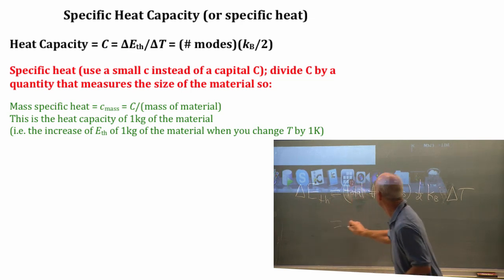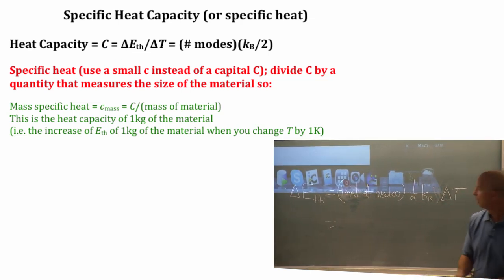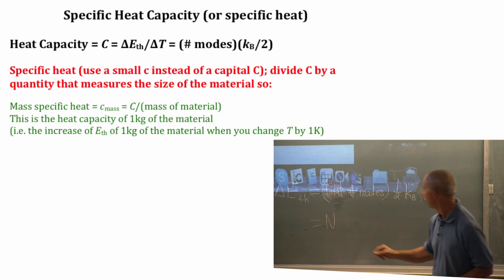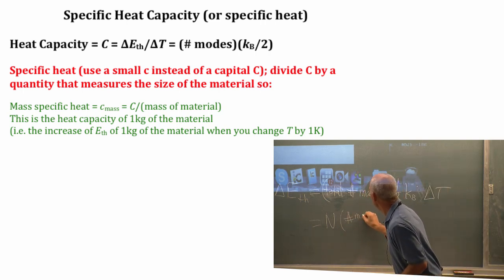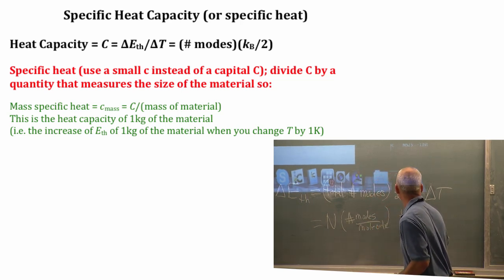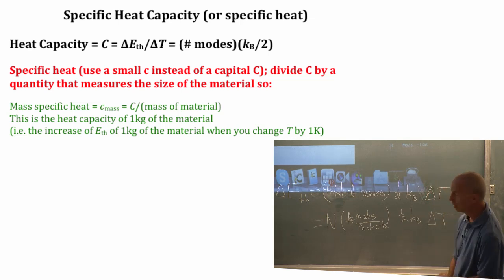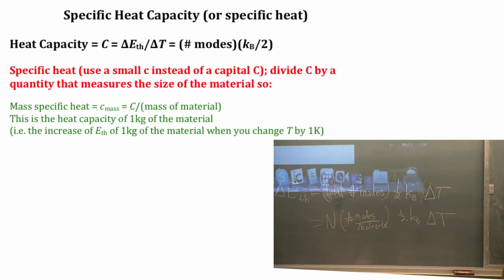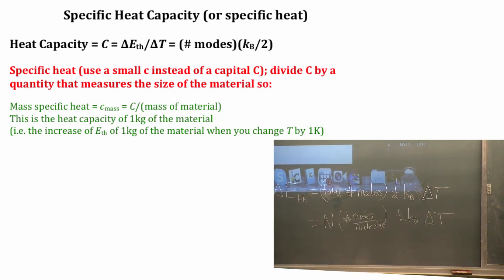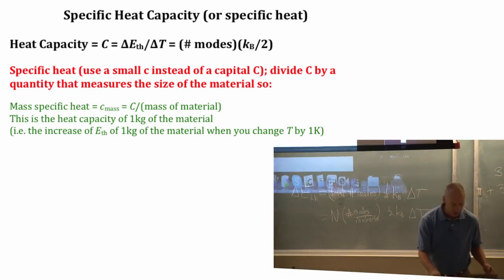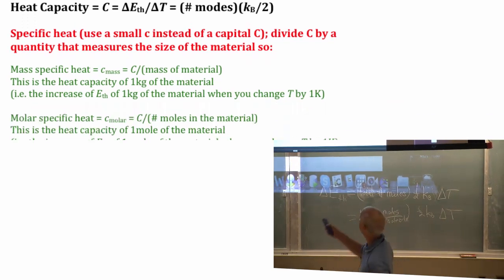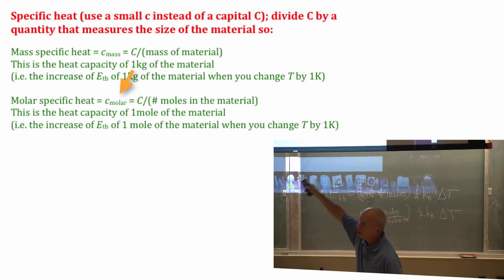For instance, total number of modes depends on the total number of molecules, and then it depends on the number of modes each molecule has. So delta E thermal depends on how much stuff you have, total number of molecules. You could measure how much stuff you have in terms of number of atoms or molecules, or in terms of moles, or in terms of the mass.